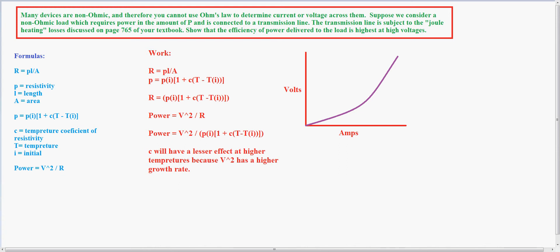For this problem, the question was: many devices are non-ohmic and therefore you cannot use Ohm's law to determine the current or voltage across them. Suppose we consider a non-ohmic load which requires power in the amount of P and is connected to a transmission line. The transmission line is subject to joule heating losses discussed on page 765 of your textbook. Show the efficiency of power delivered to the load is highest at high voltages.